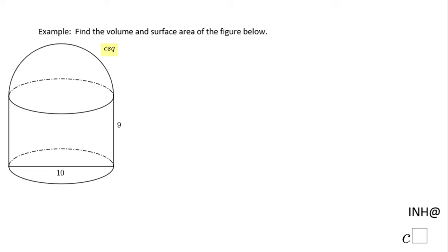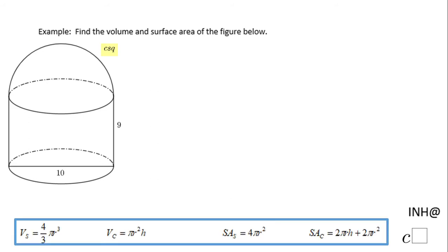Welcome, or welcome back to C Squared. In this example, in order to find the volume and surface area of the figure below, which is a composite shape, we notice we have a cylinder, and on top of the cylinder we have half of a sphere. For that reason, we're going to use the formulas below. The first thing we need to find is the radius. This 10 is the diameter of the base of the cylinder.